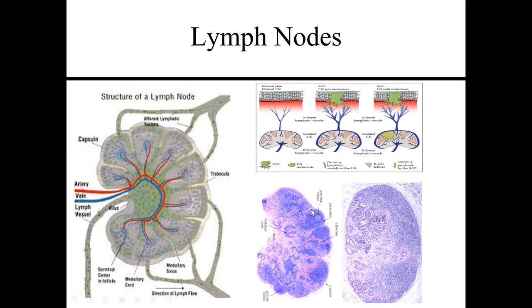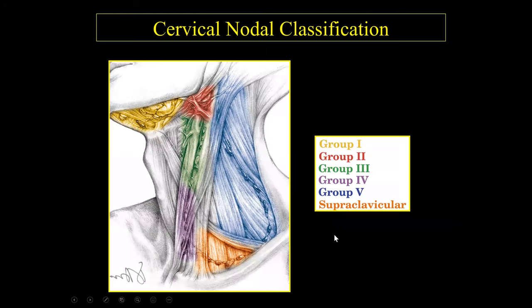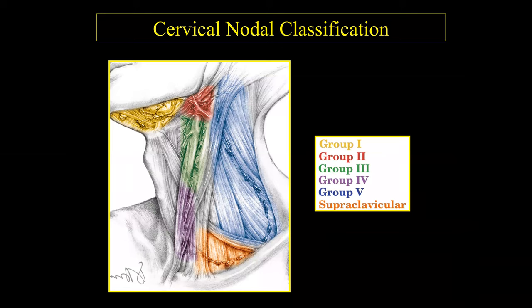The earliest signs of metastases will be in the periphery. Eventually the lymph nodes become large and oval-shaped. On CT scans, the earliest areas of low attenuation will be in the periphery of the lymph nodes.